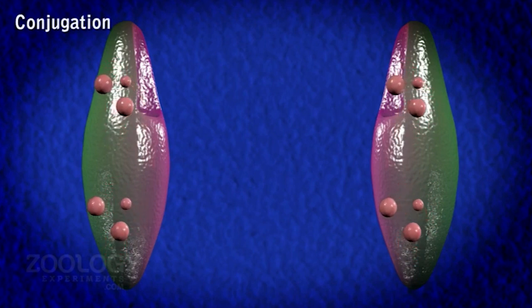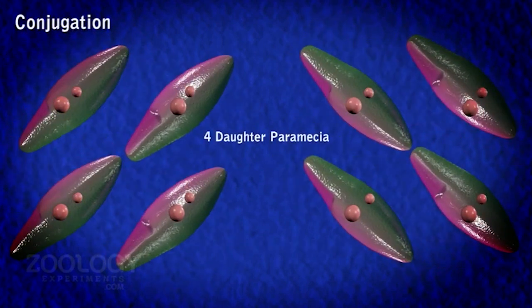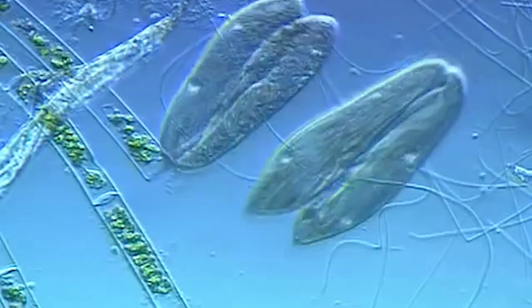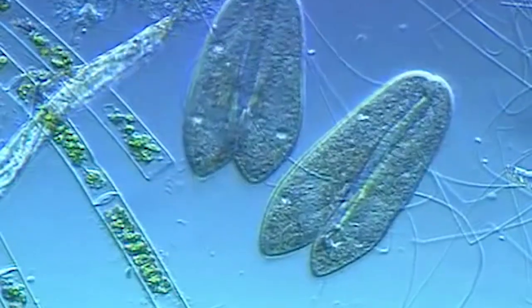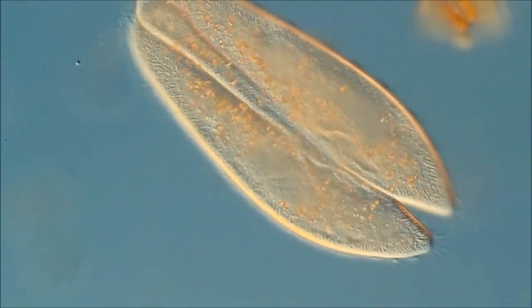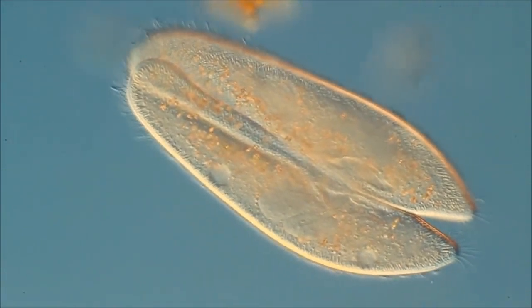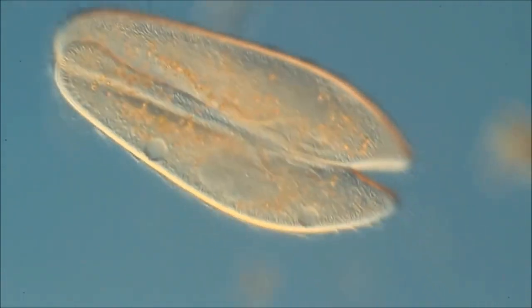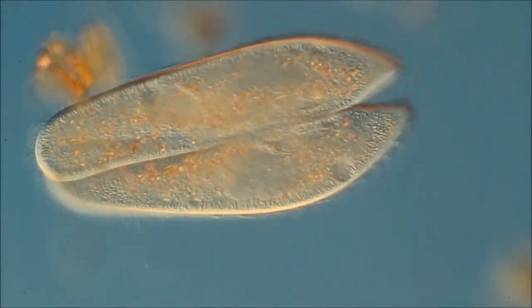Each daughter paramecium has one micronucleus and one macronucleus. In this way, eight paramecia are produced as a result of the conjugation of two mating paramecia. During conjugation, genetic materials are exchanged between the matching mating types, bringing genetic variability in the offspring due to genetic recombination. Genetic variability can speed up evolution and increase the chance to adapt to environmental change, so sexual reproduction increases the chance of survival of the entire population.